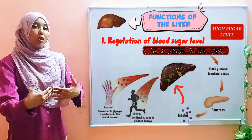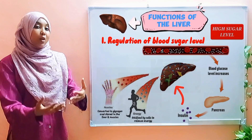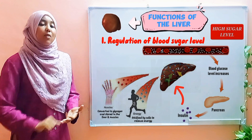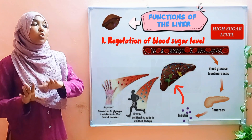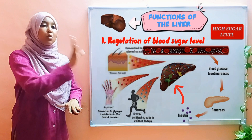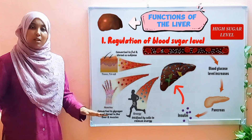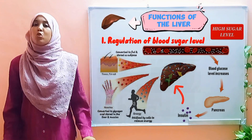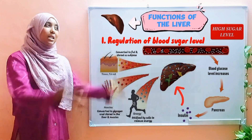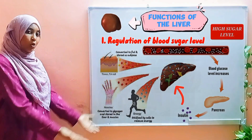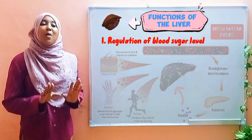Insulin also does two additional things: it converts the excess glucose into two different forms. Number one, excess glucose is converted to glycogen, which is then stored in the liver. Some of the excess glucose is also converted into fats, which are stored underneath our skin. After some time, the amount of sugar levels in your body has gone back down to normal, thanks to insulin.